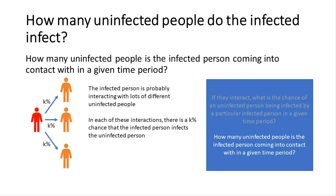The second question is: how many uninfected people is the infected person coming into contact with in a given time period? Unfortunately, the infected person is probably interacting with lots of different uninfected people — especially because with a lot of diseases, you're infectious before you get symptoms. In each of these interactions, there's a K% chance that the infected person infects the uninfected person.